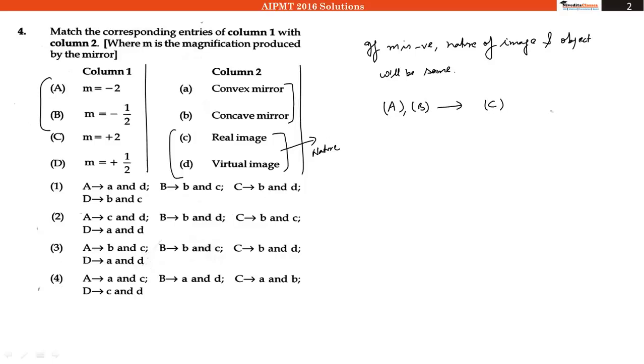And to produce a real image, we have to use concave mirror. Because in convex mirror, the image will always be virtual and will be of smaller size.